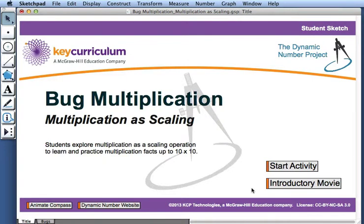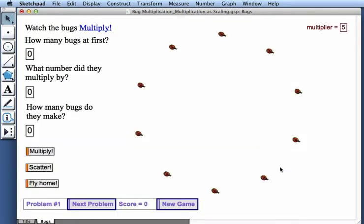This movie describes how to use the activity Bug Multiplication, Multiplication as Scaling. Here we have a circle of bugs. There are 10 bugs in all.